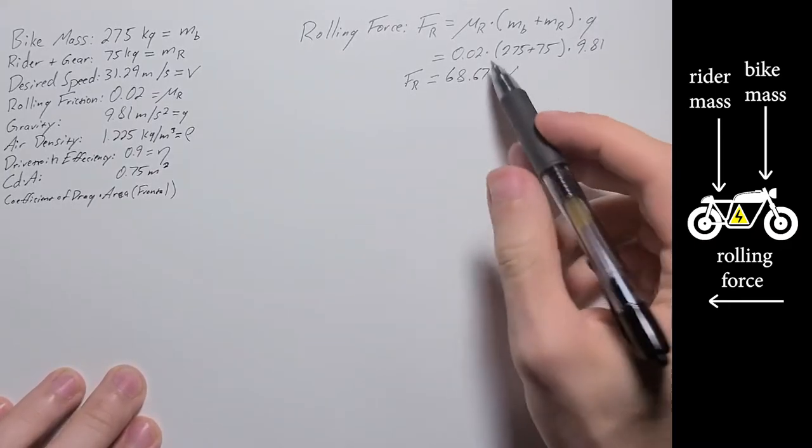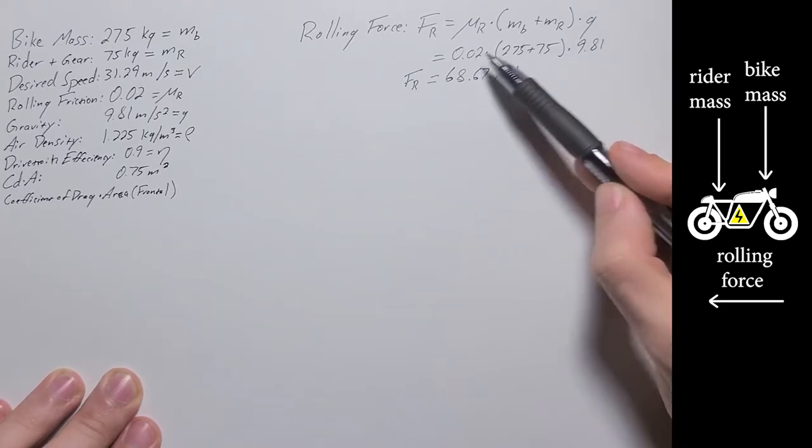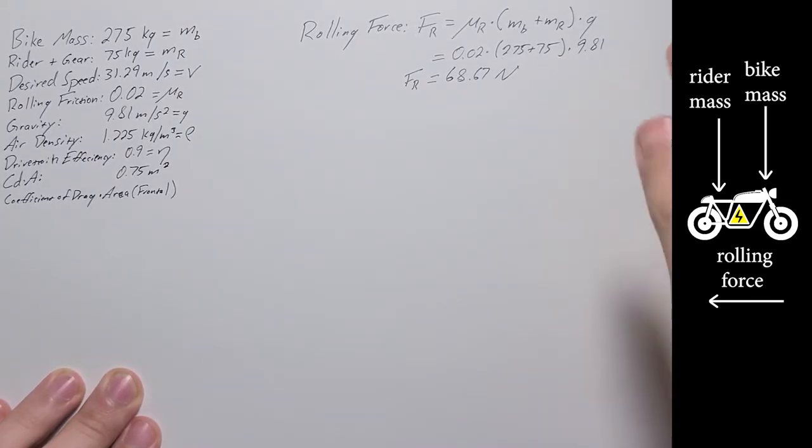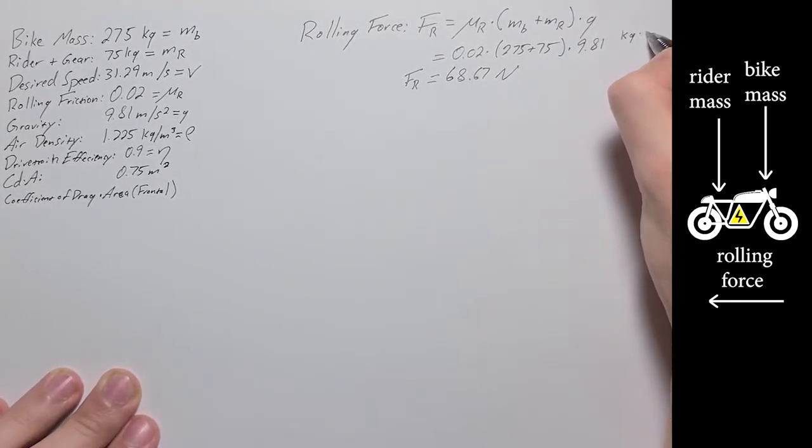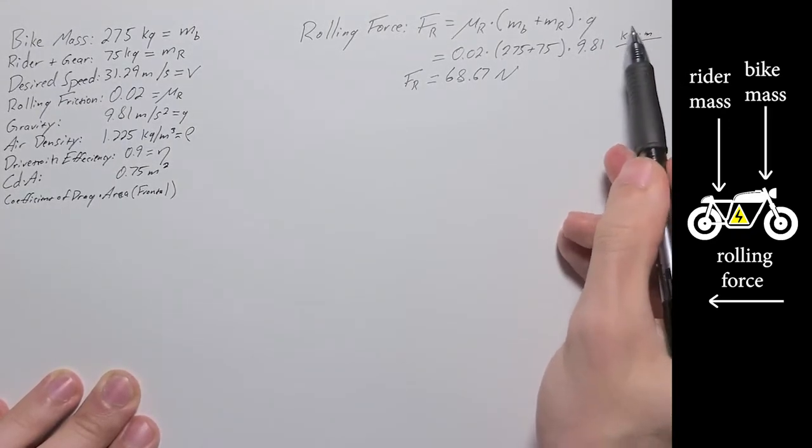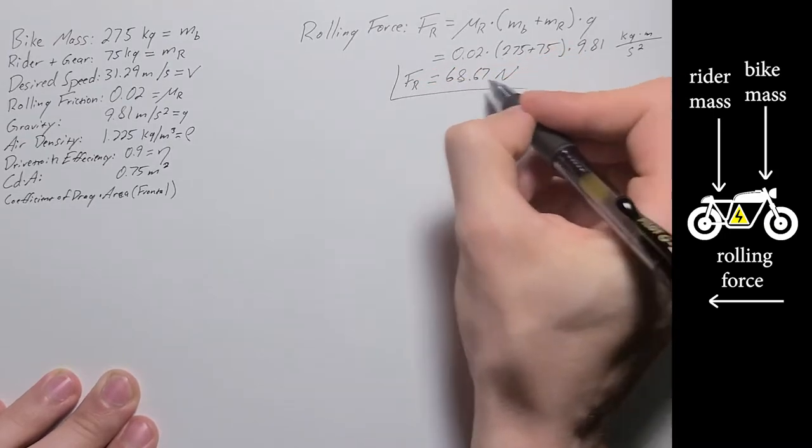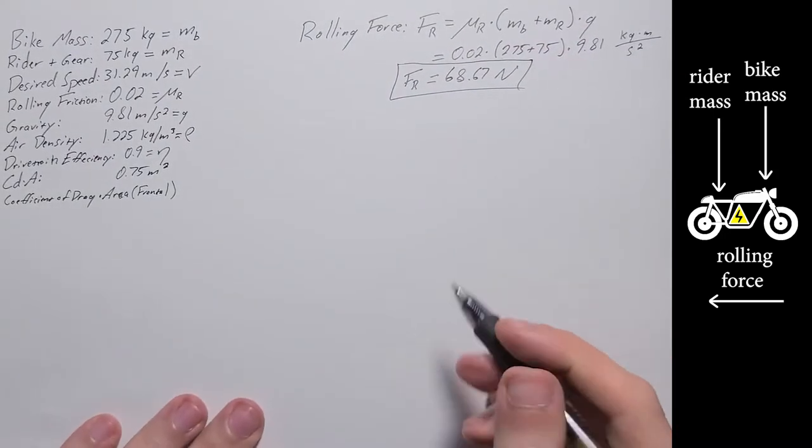So this value comes out to 68.67 newtons. Double checking units, going through here. The first one, that's unitless, and this is measured in kilograms. So we've got kilograms there. This is meters per second squared. And one newton is one kilogram meter per second squared.